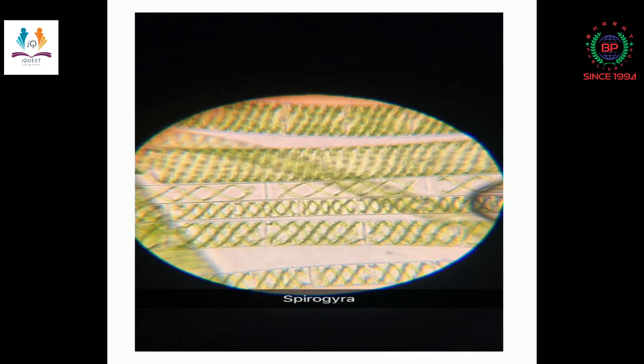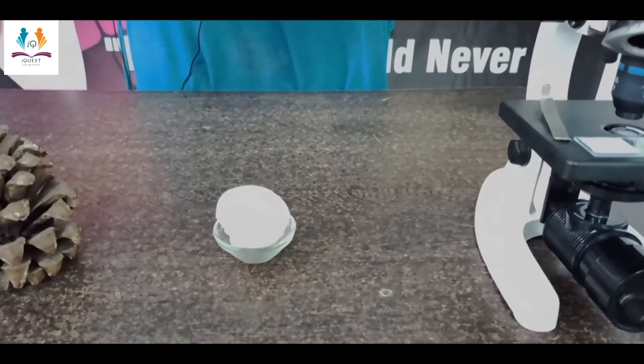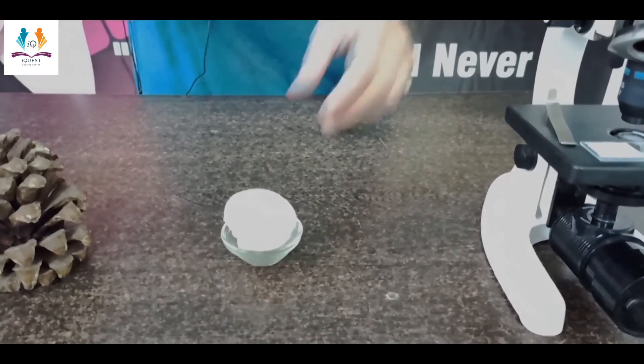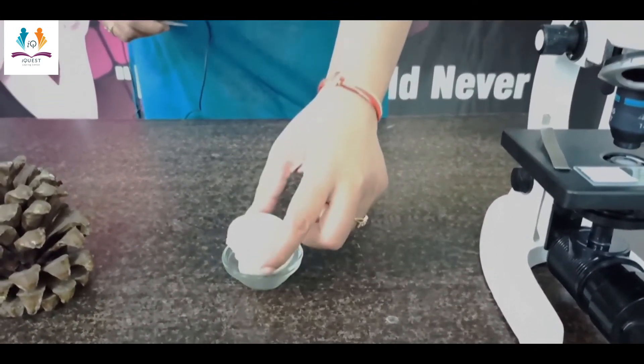Chlorophyll pigment is present within Spirogyra, making it green in color, so it is an autotroph. It has a flat ribbon-like chloroplast. It reproduces by sexual reproduction, which is conjugation, and by vegetative reproduction through fragmentation.